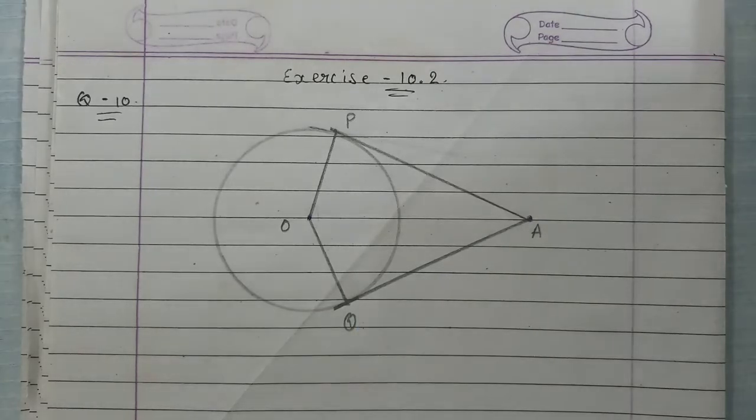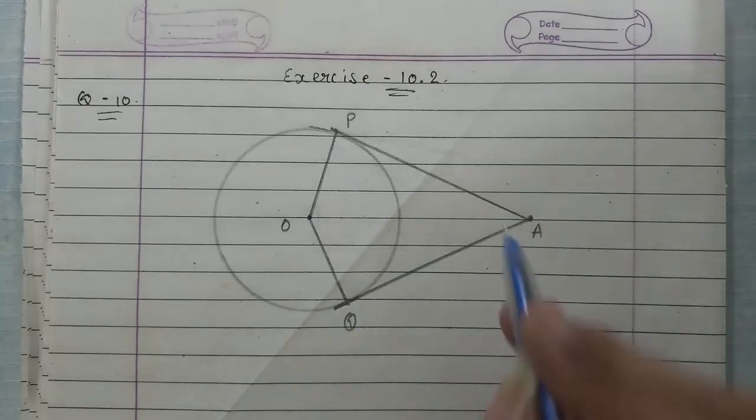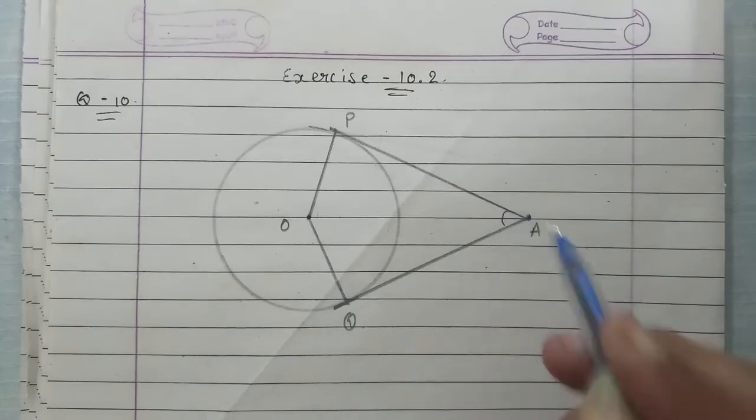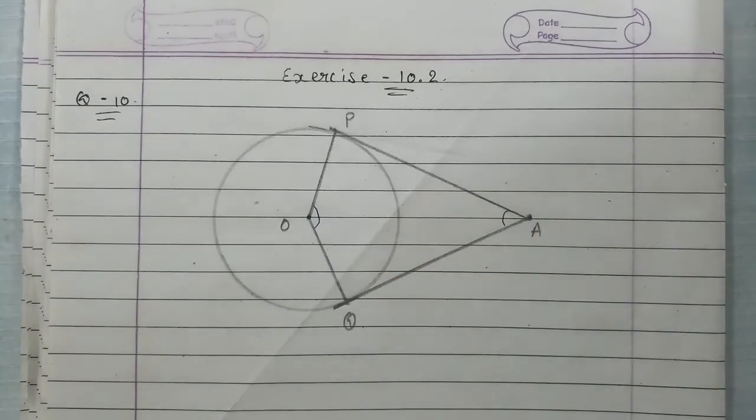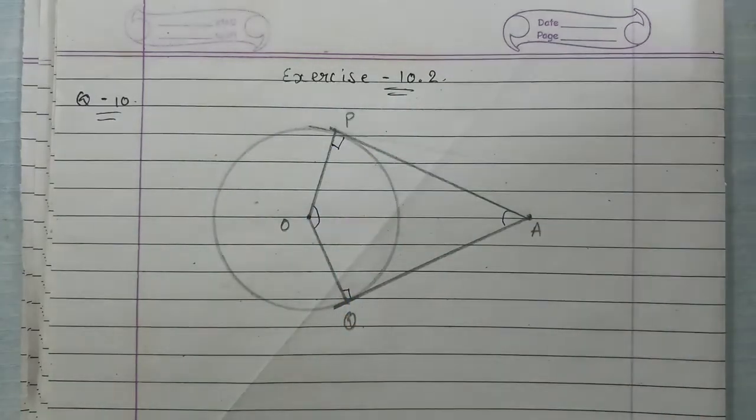The tangents are AP and AQ. Now we have to prove that these angles are supplementary. This is what we have to prove. First of all, there is a right angle because the radius and tangent are perpendicular to each other.